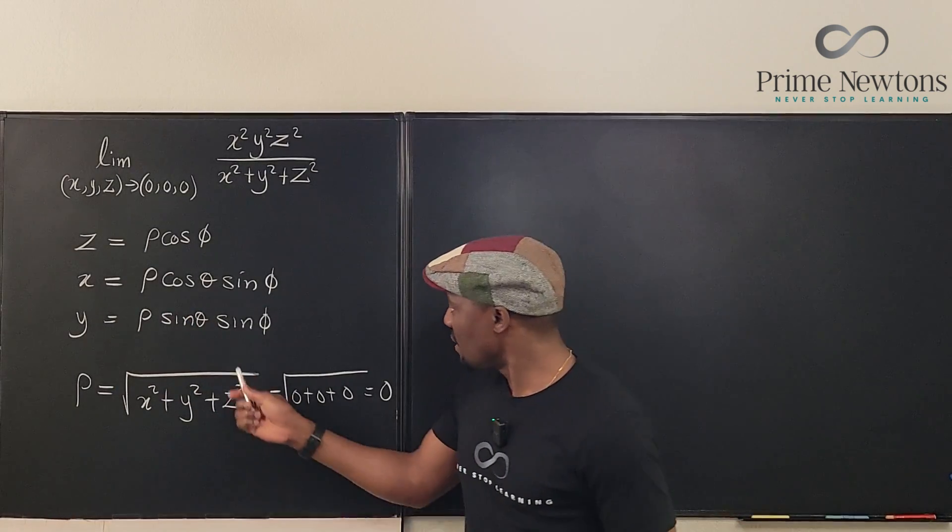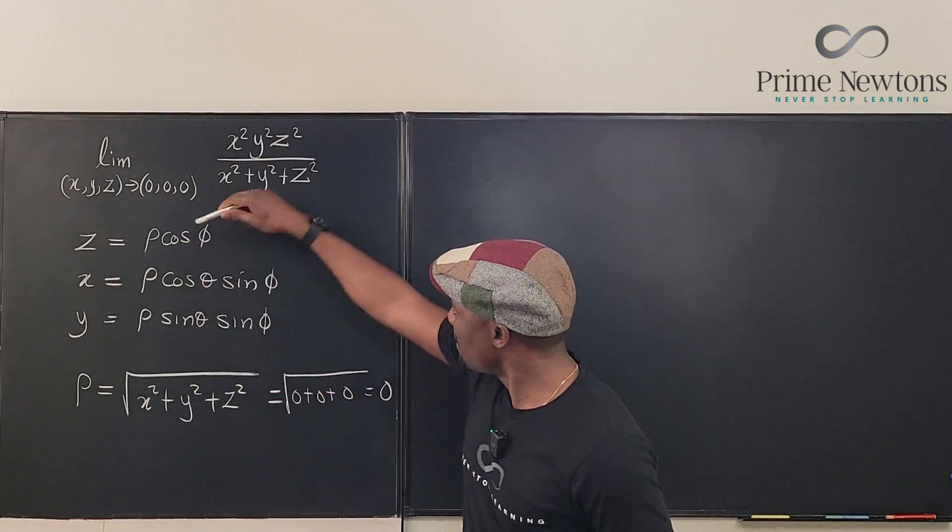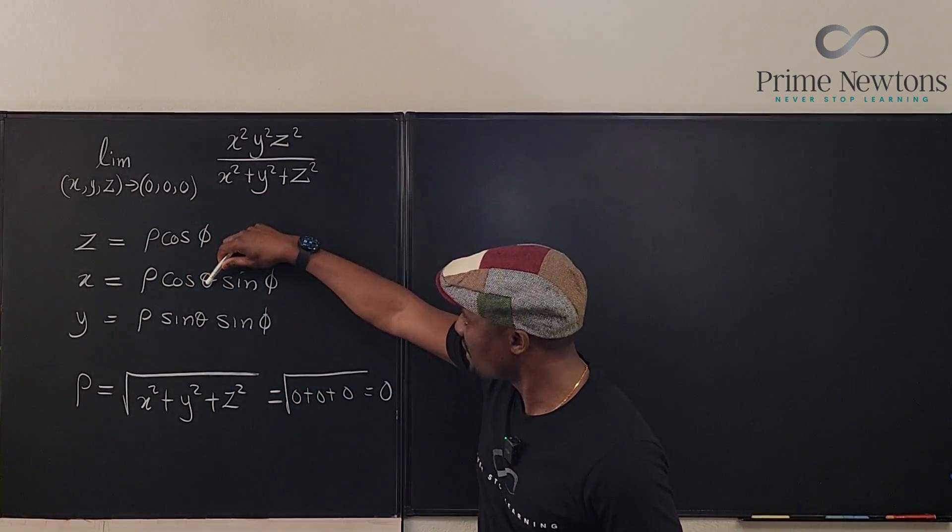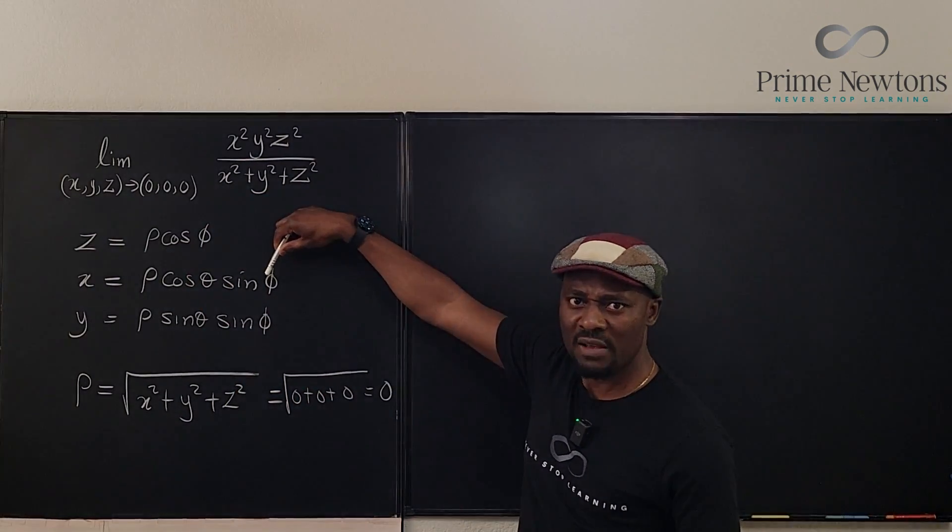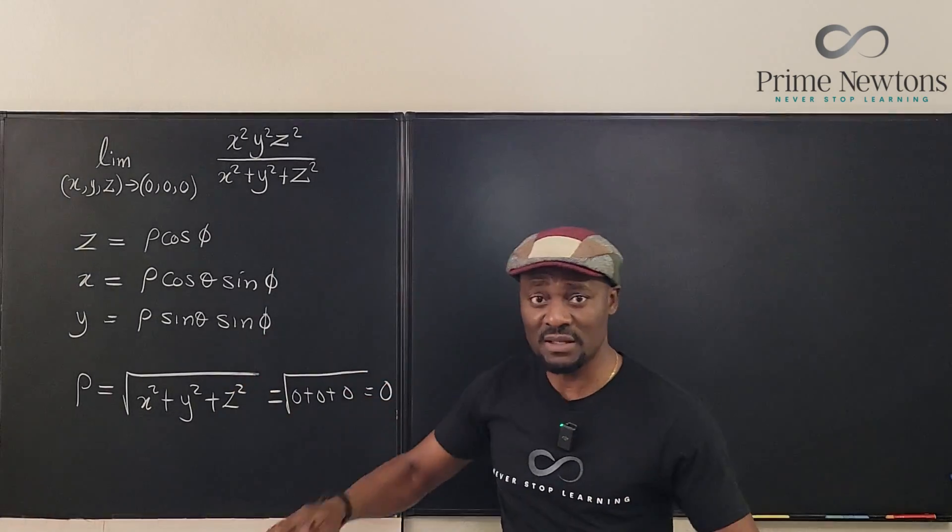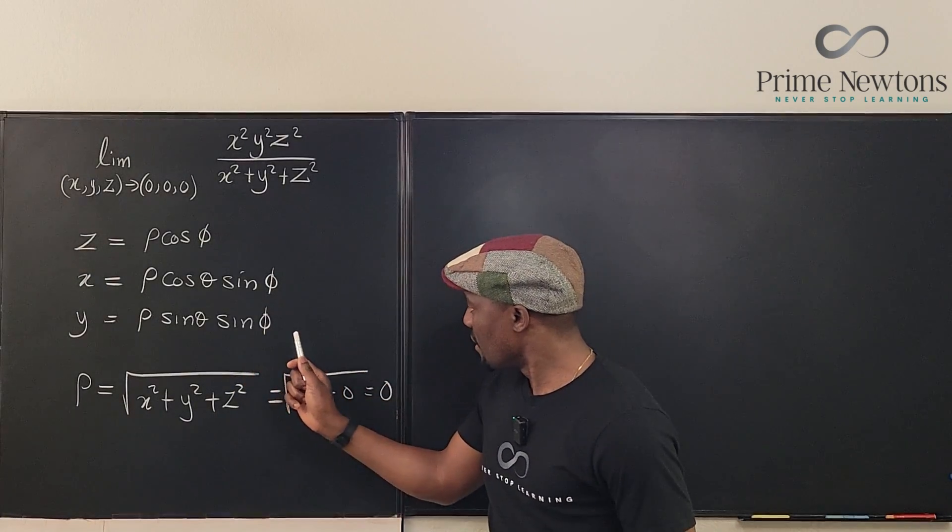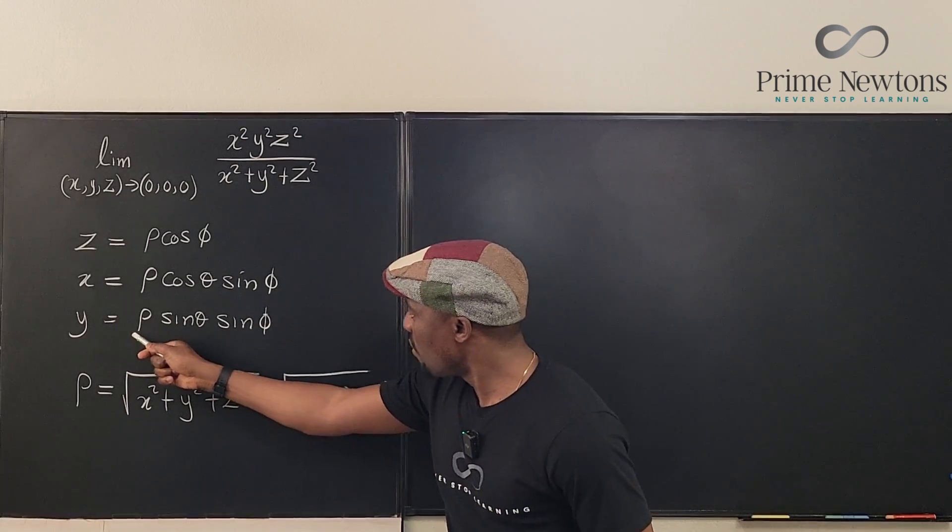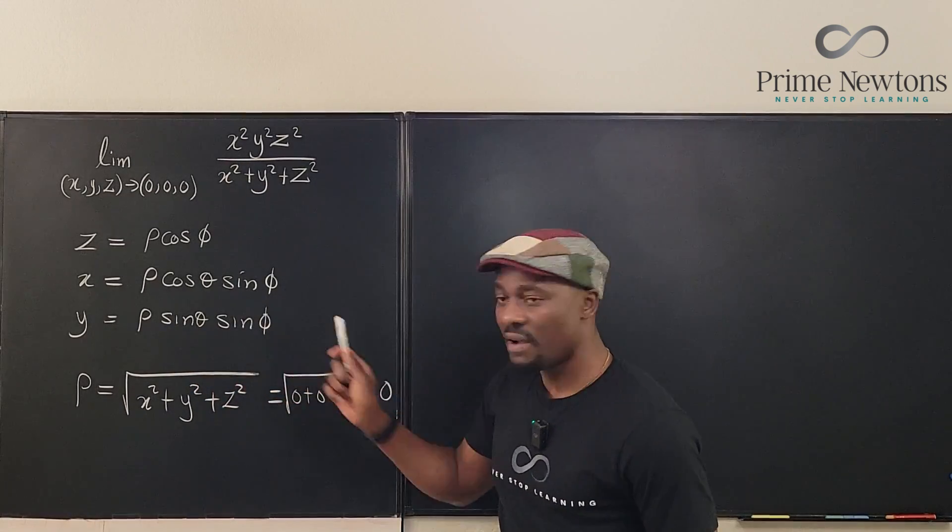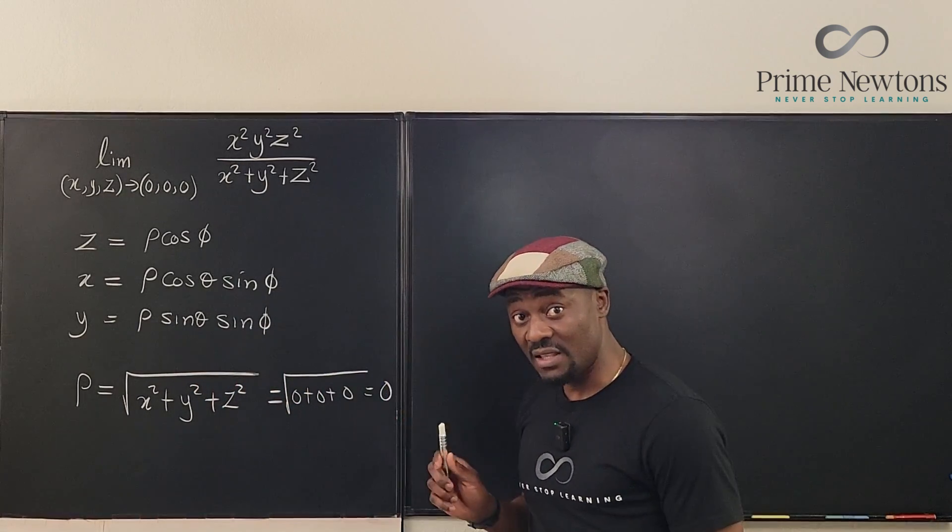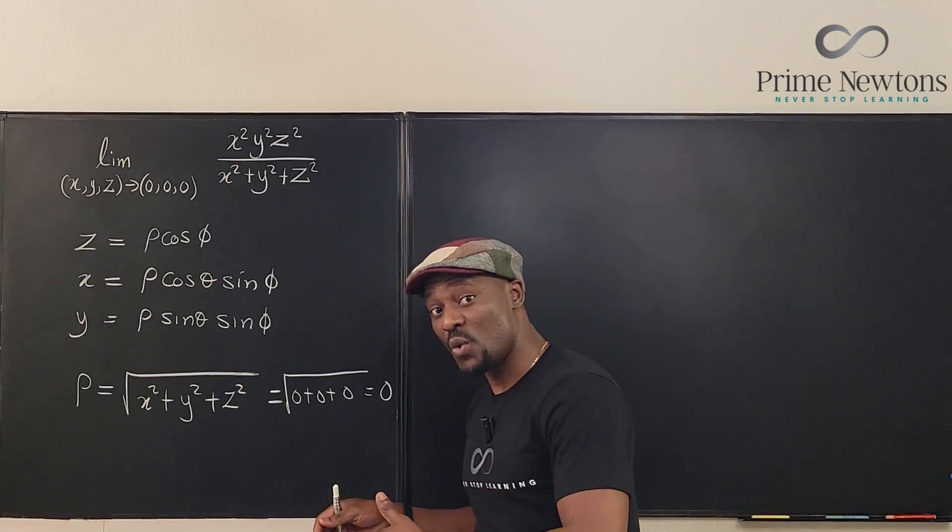Now, we're going to have these angles. Some books don't write their phi this way, they write it a different way, it doesn't matter. But this is what we know: we have rho, we have theta, and we have phi. So let's take this limit in spherical coordinates form.